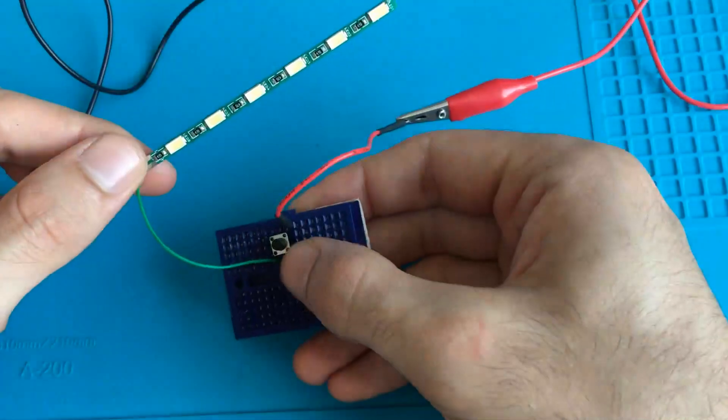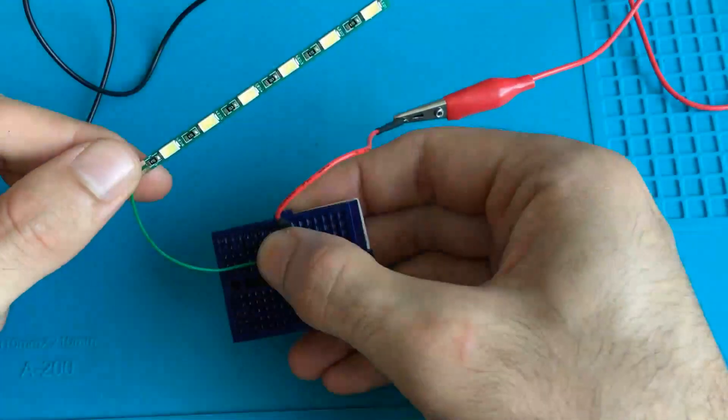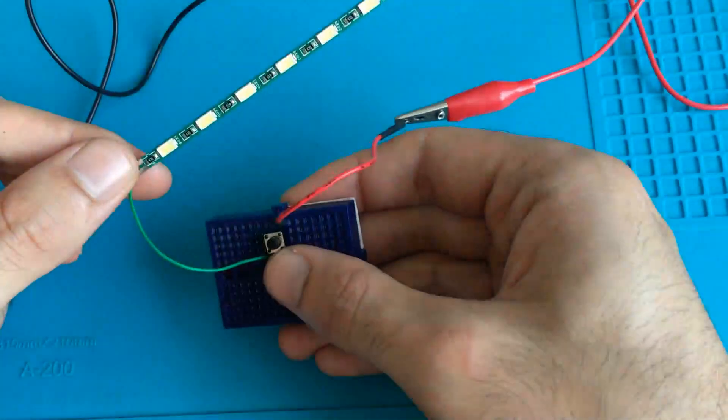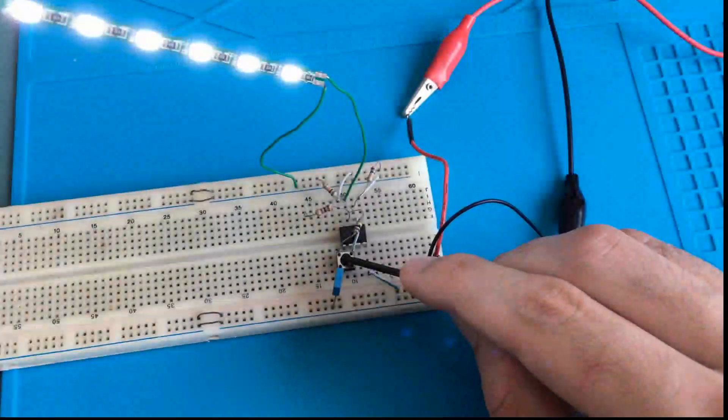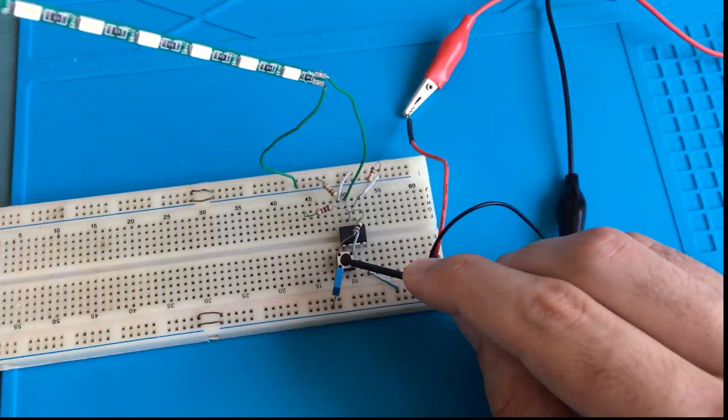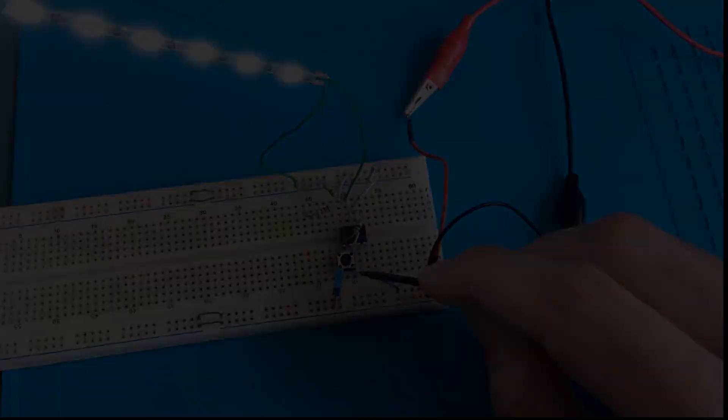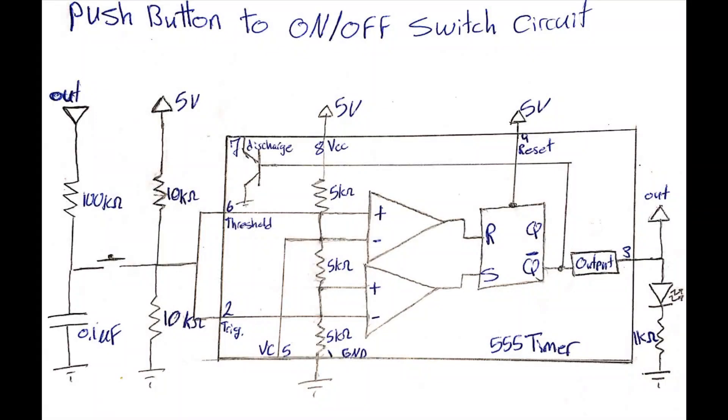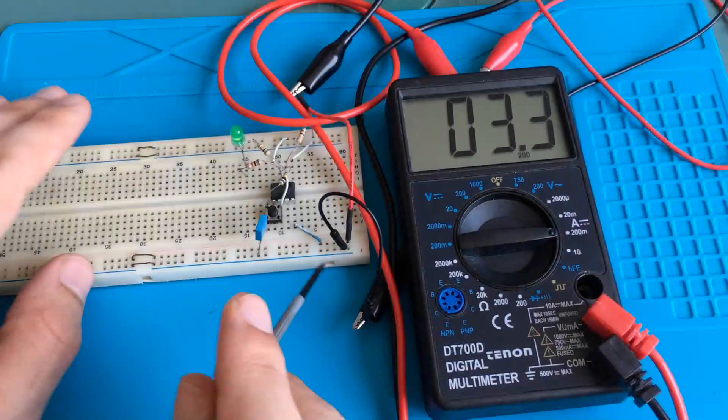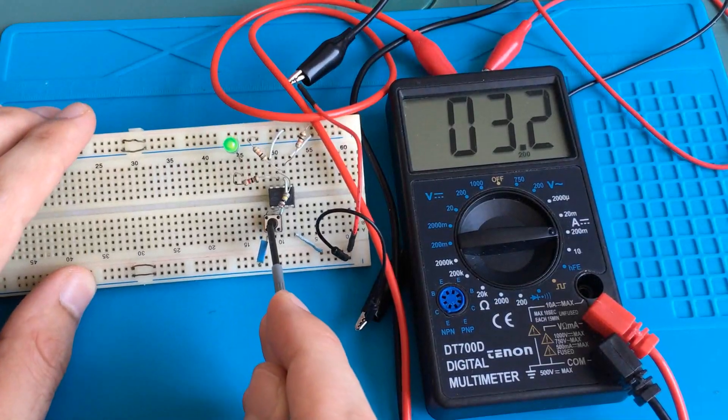However, there is a trick that we can use to solve this problem with the help of a 555 timer. In this video we are going to have a look at this 555 timer based light circuit, explain its working principle, and test its power consumption when it's used to convert a push button into an on-off switch.